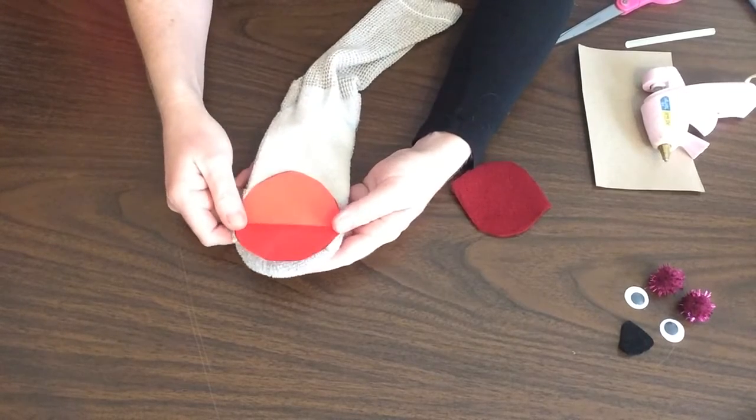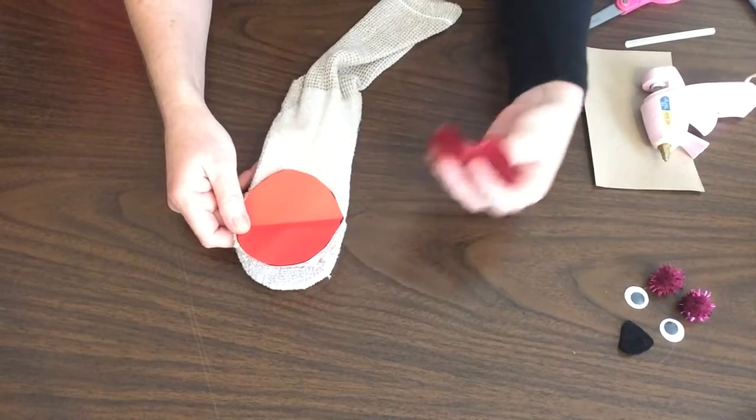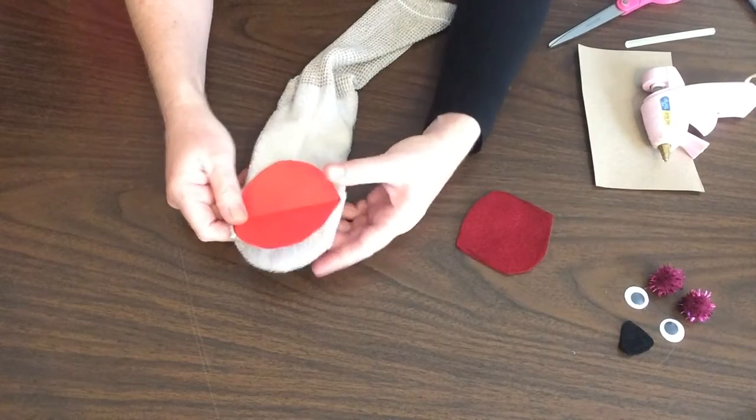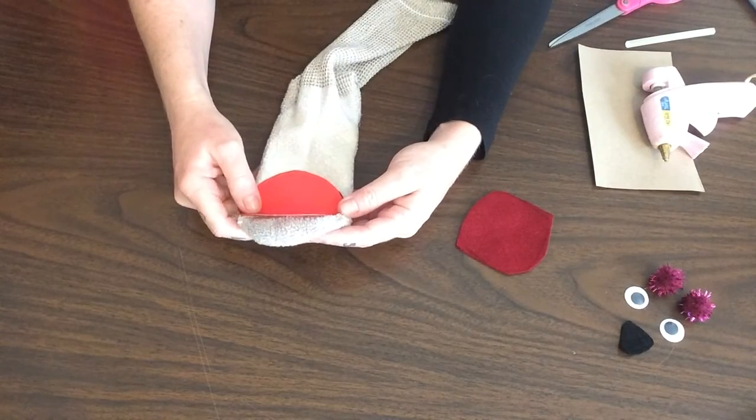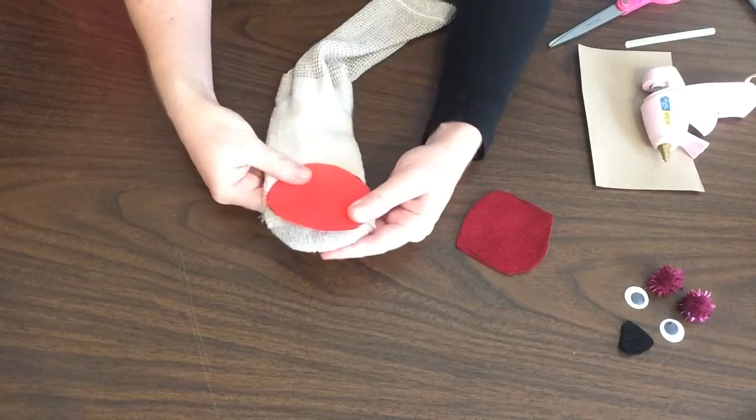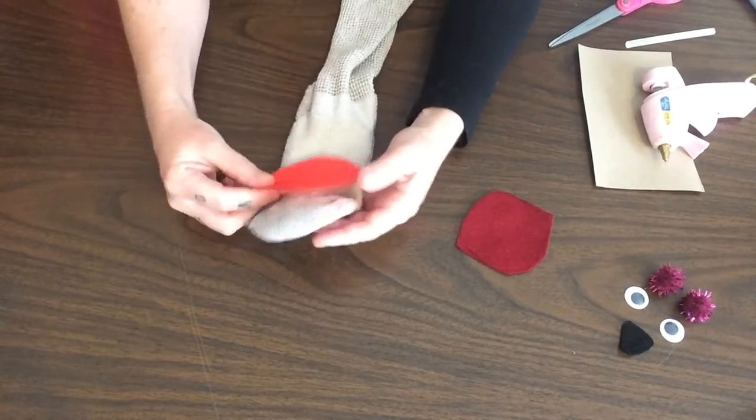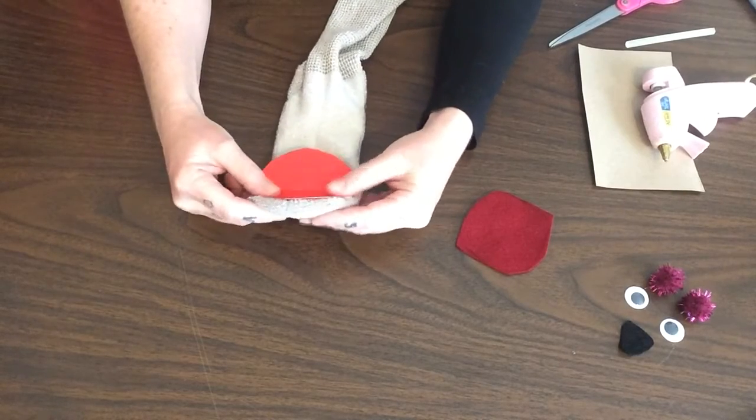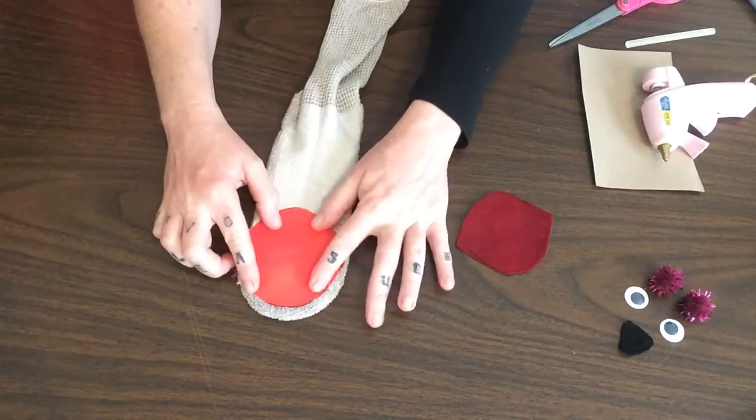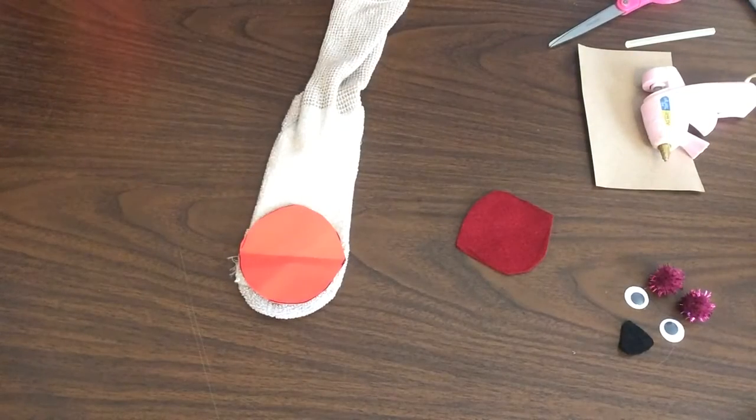Because when you turn it inside out and you glue the felt piece on the outside for the inside of the mouth, that is going to cover the seam. It's going to line up with this one. So make sure that you have it folded and that it is on the seam. Let's go ahead and glue that on.